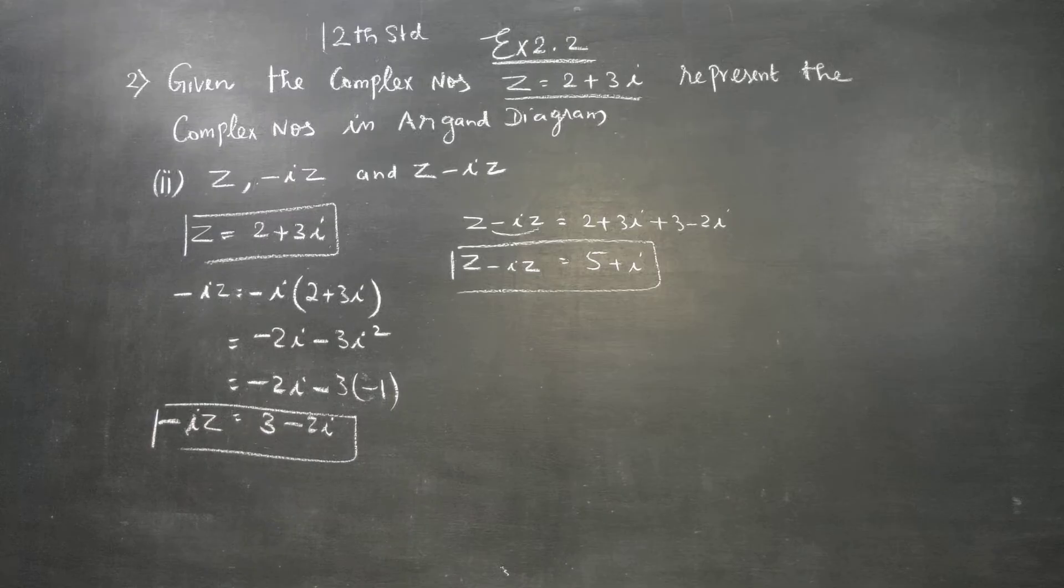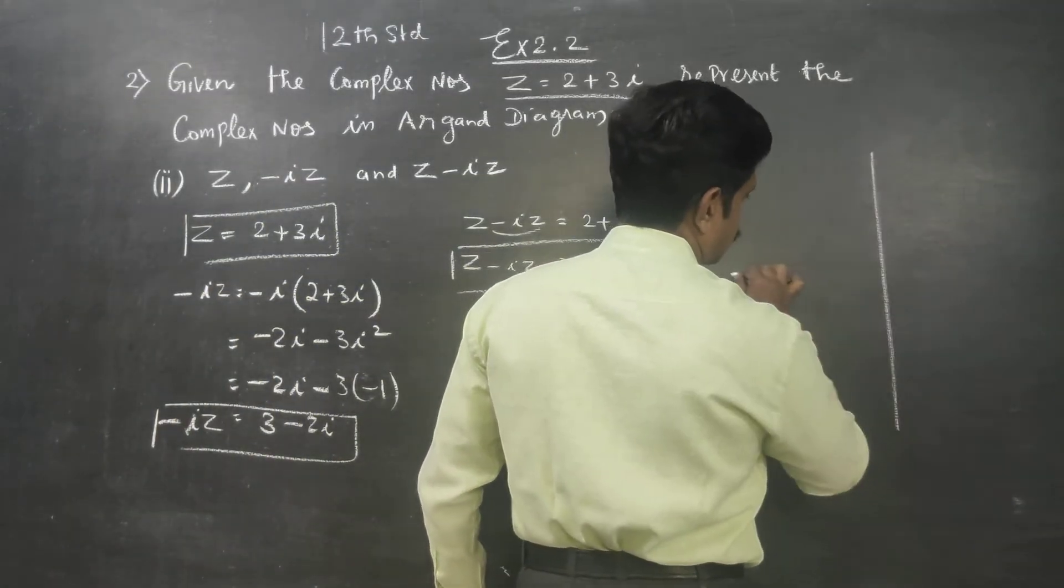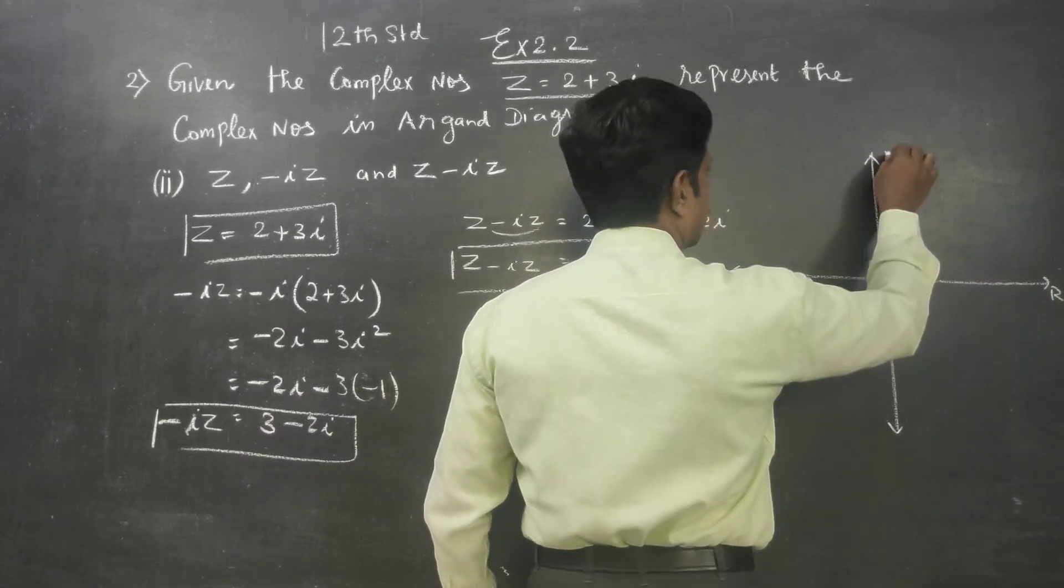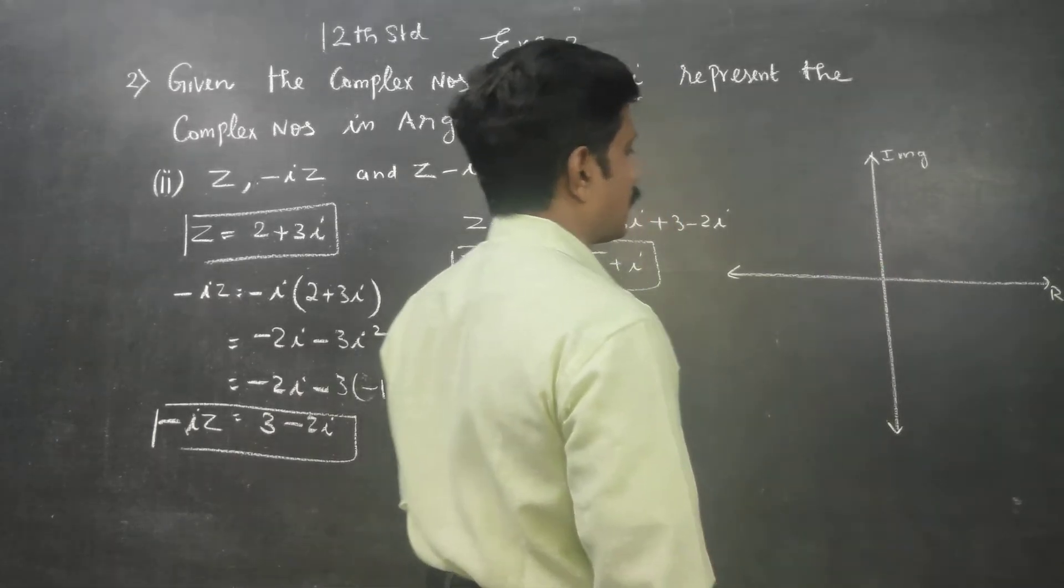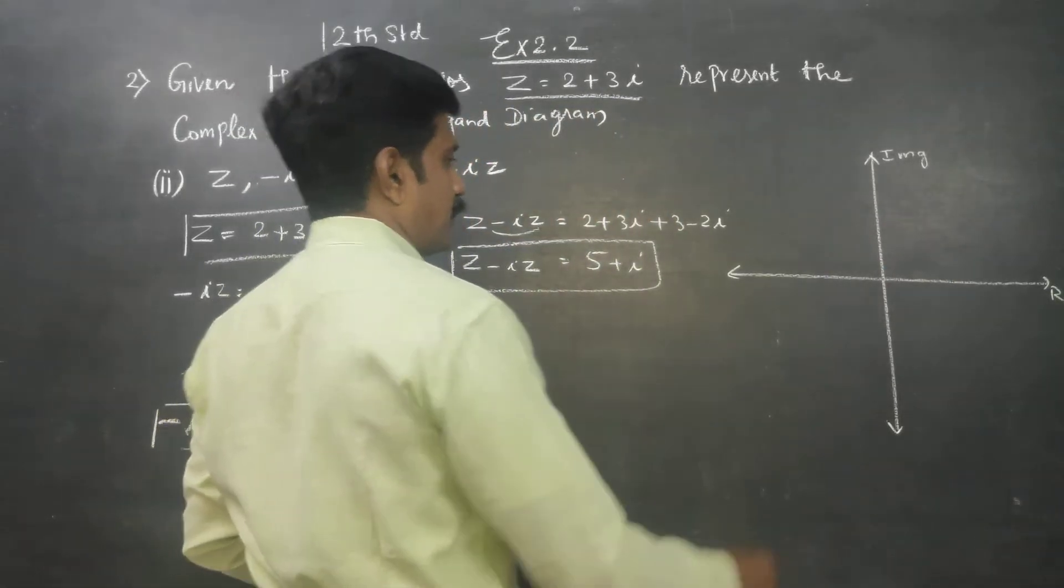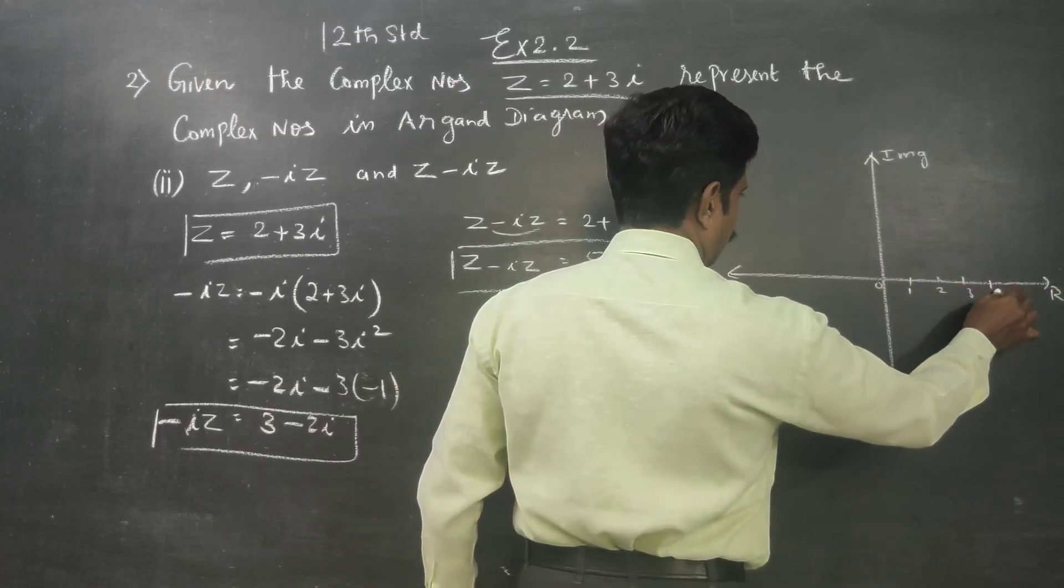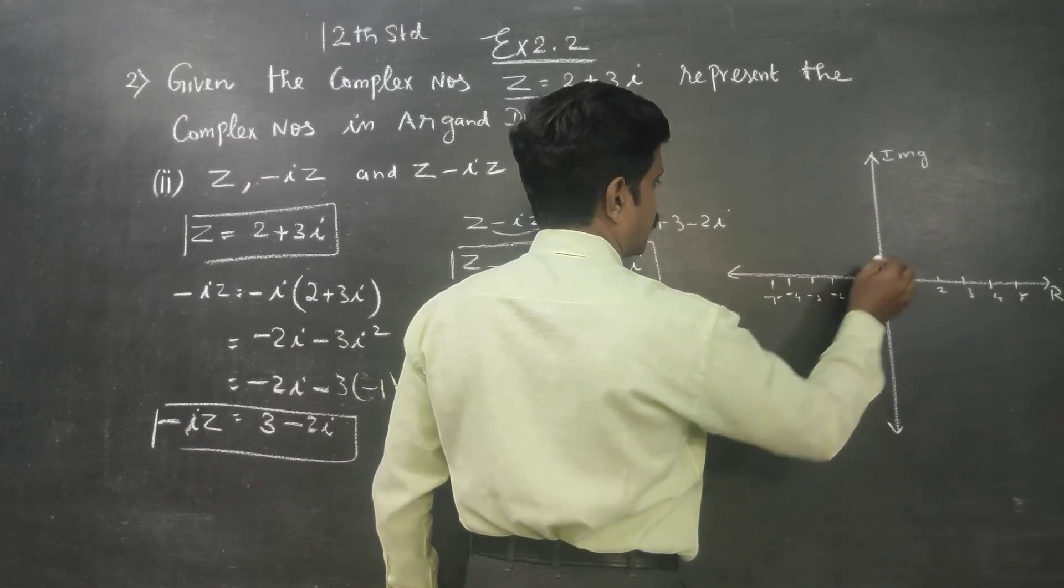So if you want to draw: real axis, imaginary axis, X axis, Y axis. The Cartesian plane becomes the Argand plane. Mark the values: 0, 1, 2, 3, 4, 5, minus 1, minus 2, minus 3, minus 4, minus 5.